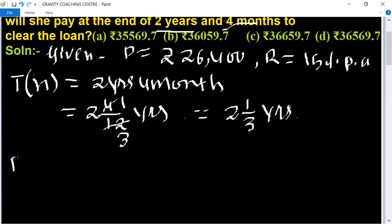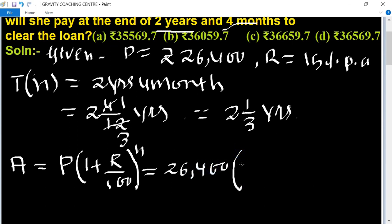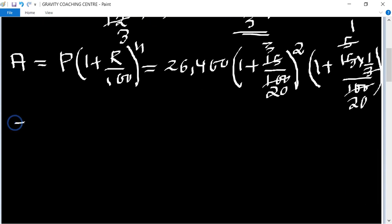First of all we find the amount. Amount equal to P times one plus R upon hundred to the power n. Principal is given as 26,400, and one plus rate of interest 15 upon 100. For time in mixed fraction, first we use 2, and after that one plus 15 times one upon three, upon 100.